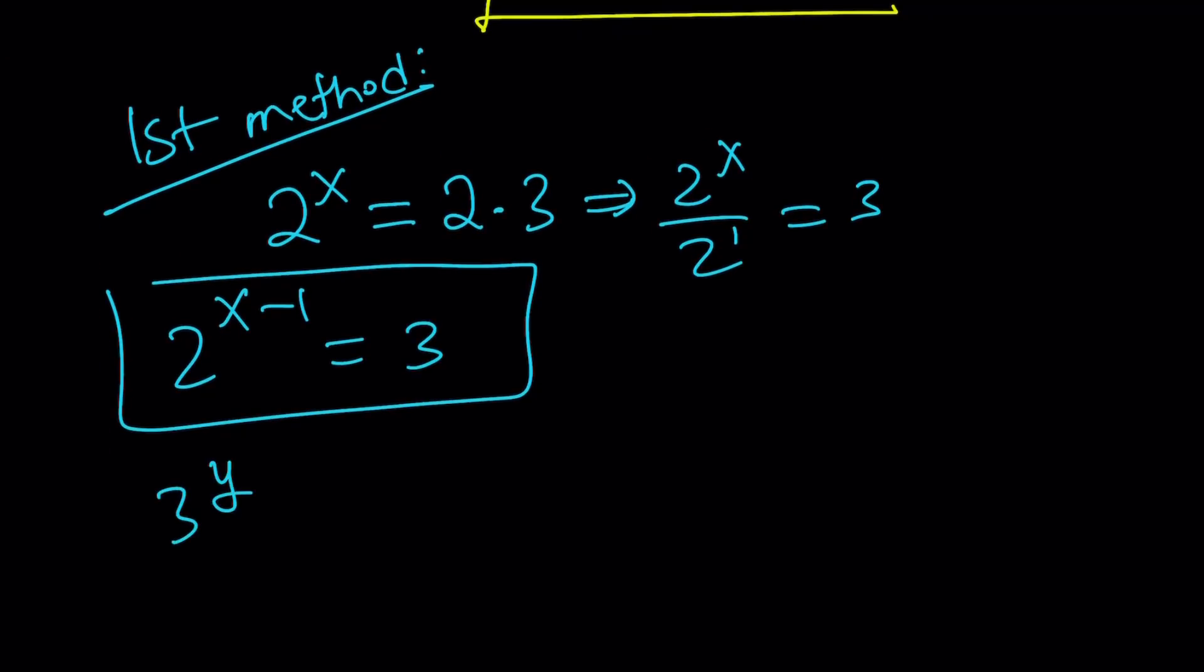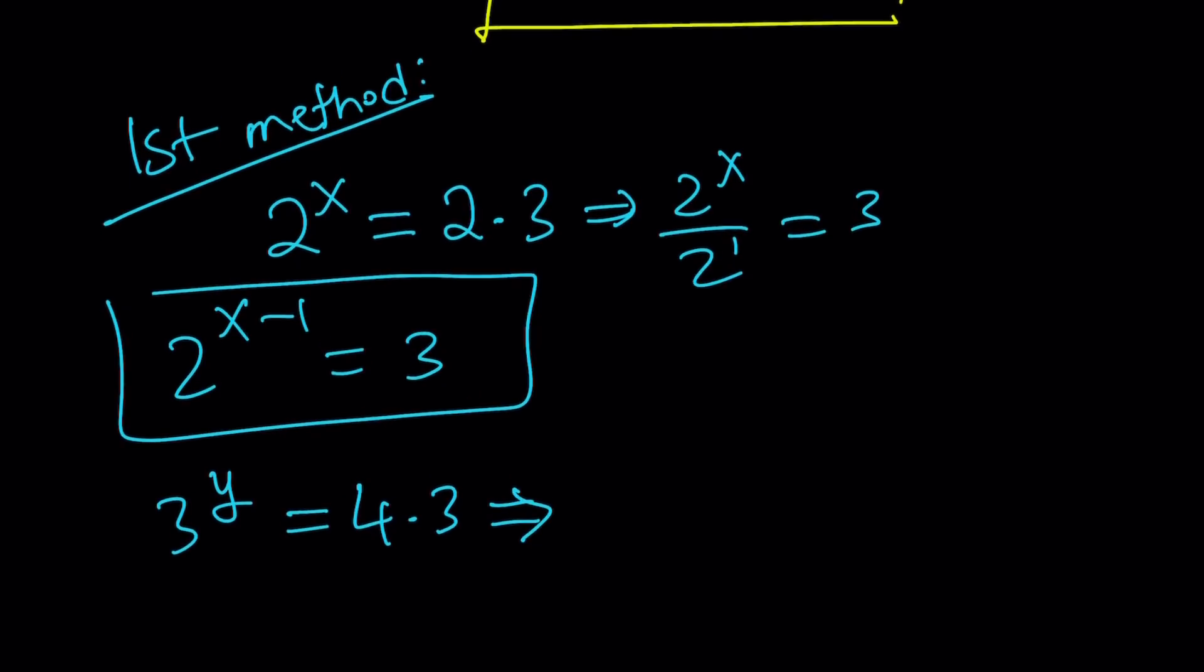We have 3^y = 12. But again, I'm going to write it as 4×3. So we used a similar approach before. Remember, just did it with logarithms. This time, I'm not using logarithms. If you don't like logarithms, you're probably going to like the first method.